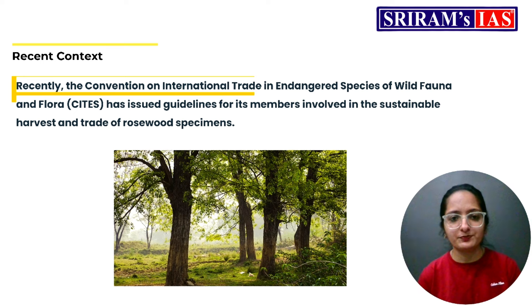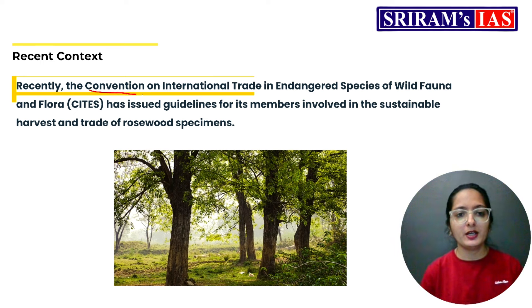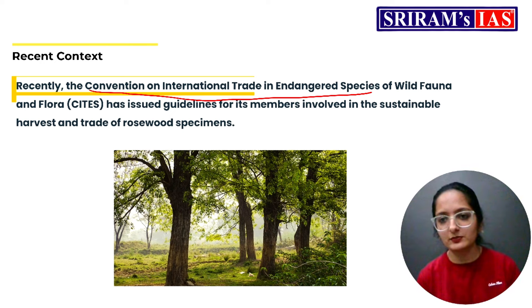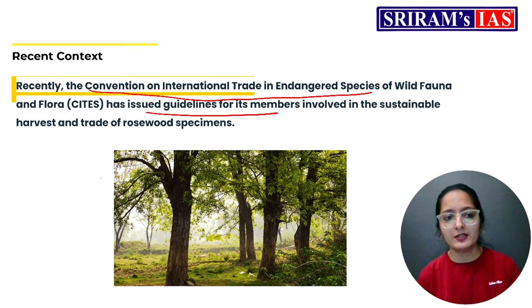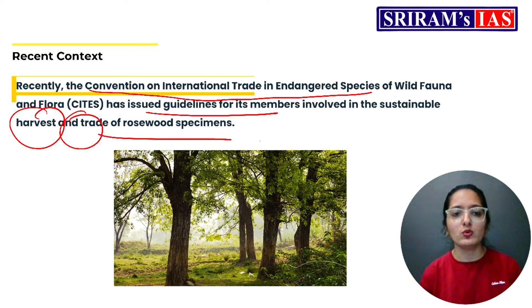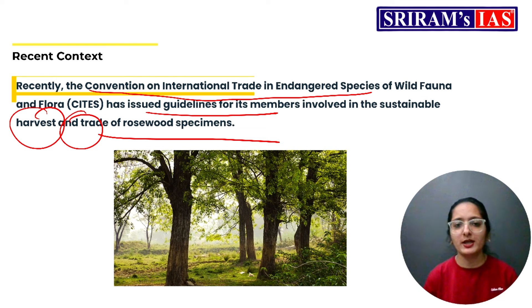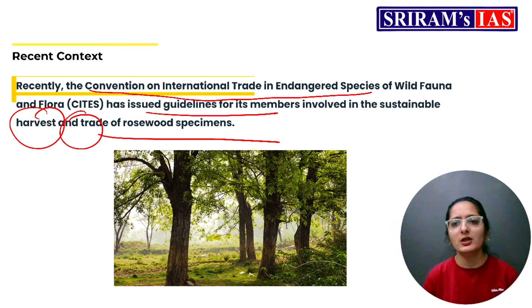Moving ahead to the next article: CITES — the Convention on International Trade in Endangered Species of Wild Fauna and Flora — has issued guidelines for members involved in the sustainable harvest and trade of rosewood specimens. They want to make sure that trade in rosewood doesn't harm the species or its environment, to ensure rosewood can continue to be available for future generations through a sustainable approach.